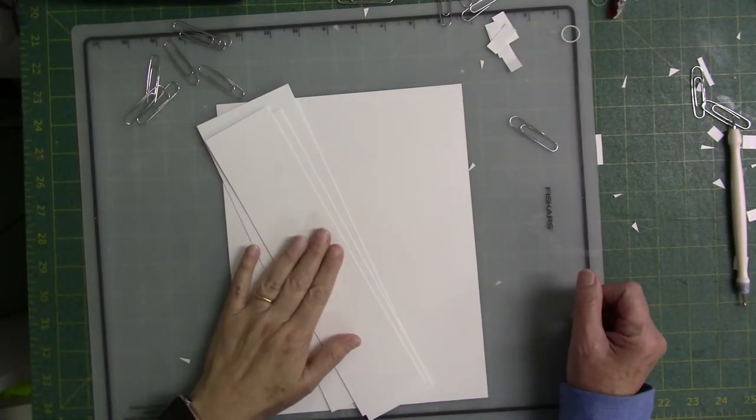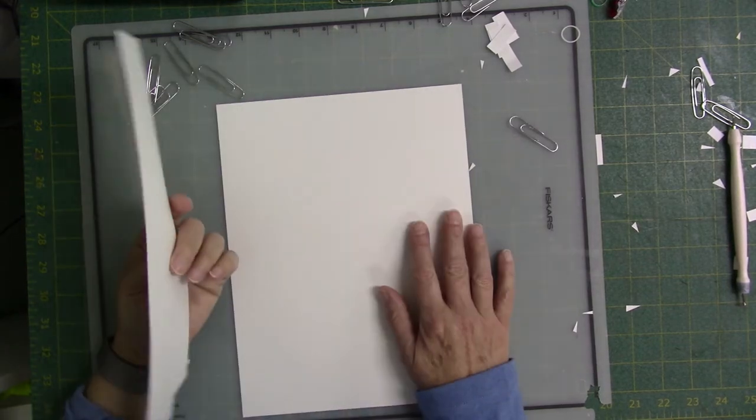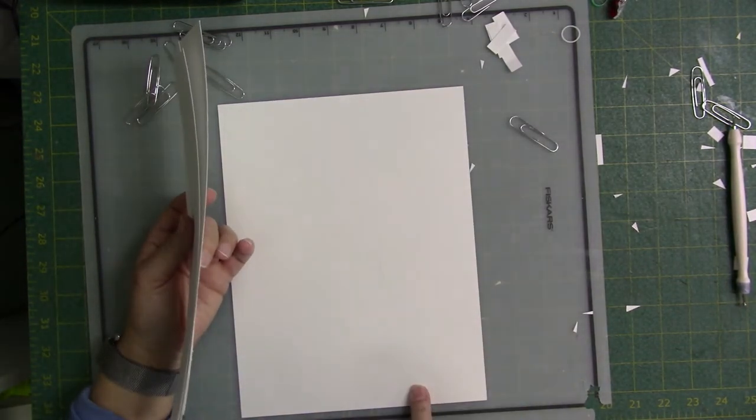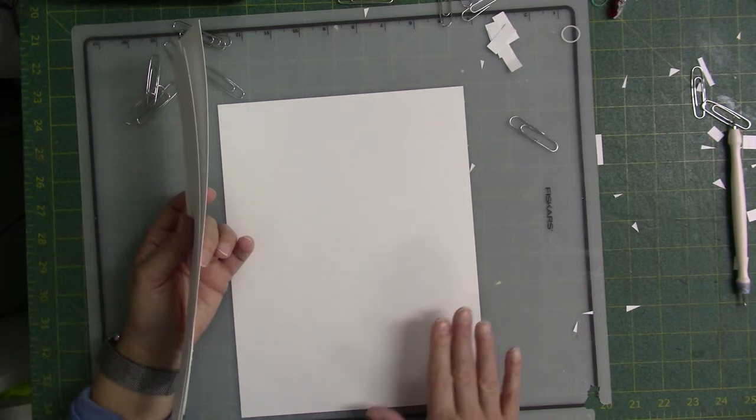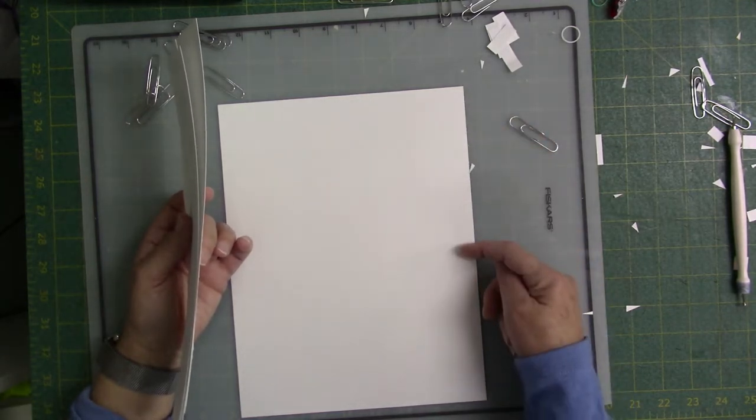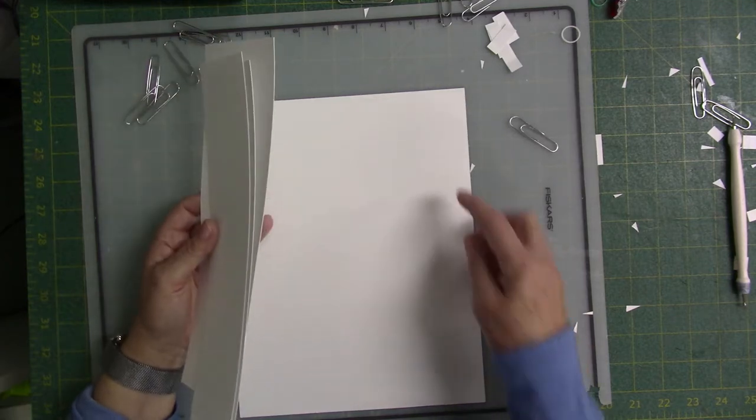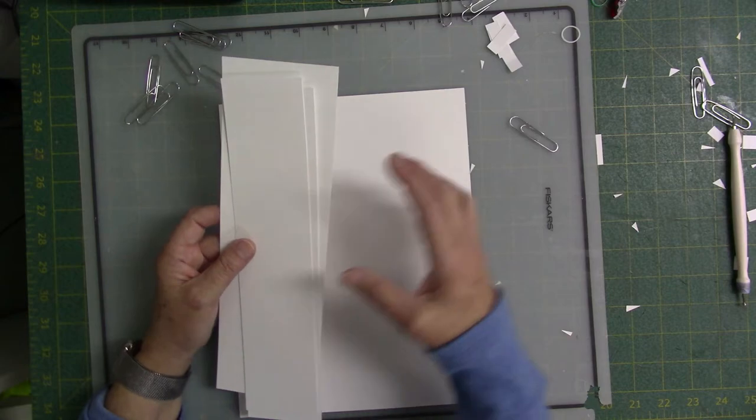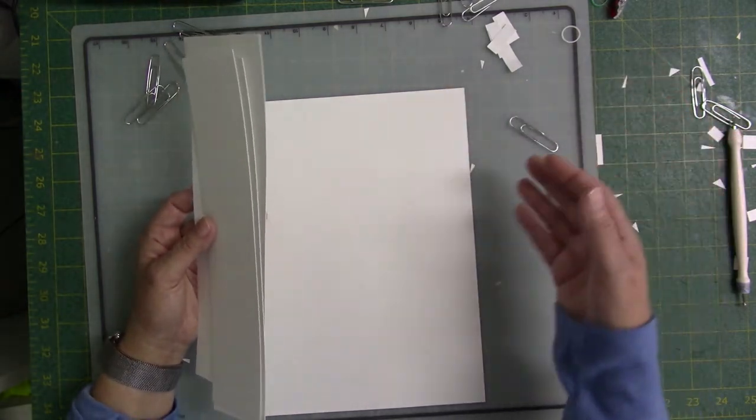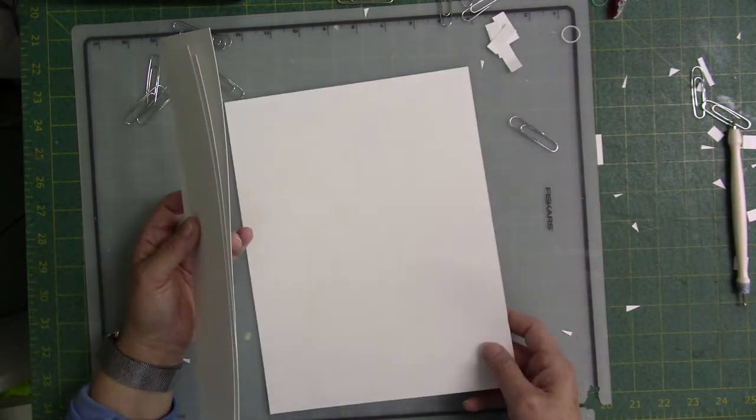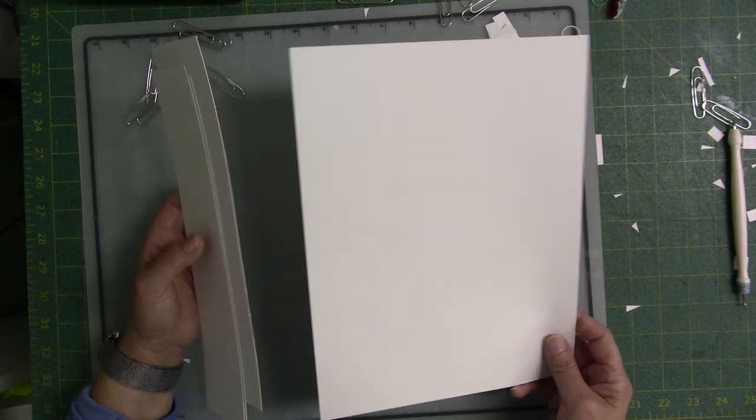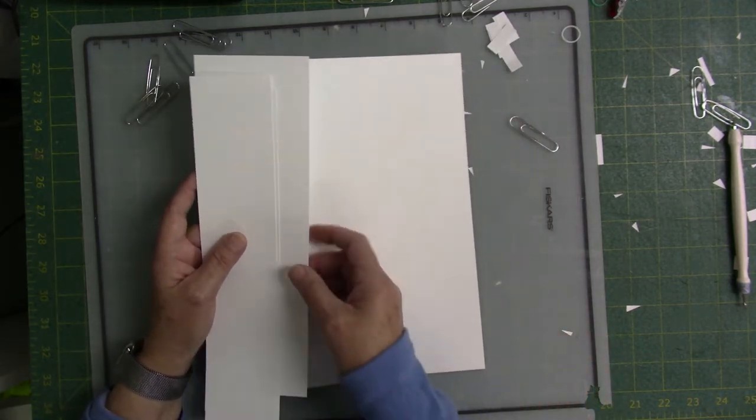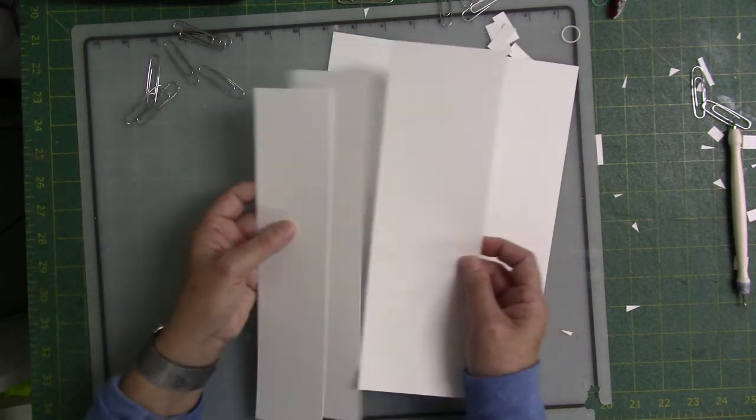For my tubes, I'm using 110-pound cardstock, and I'm cutting my strips the entire length of the paper. You would decide how long you want your tube to be. So some of them I cut in half because I just wanted to make a tube a length and a half and join them in different configurations. So you can choose how long you want your piece to be and cut your strips in that way.